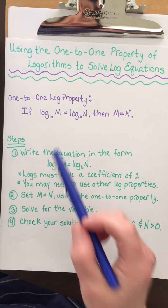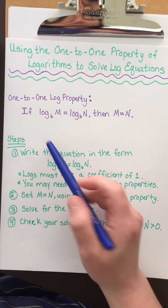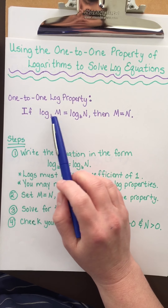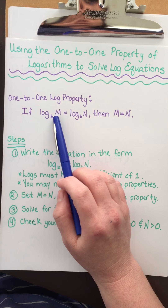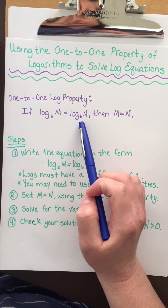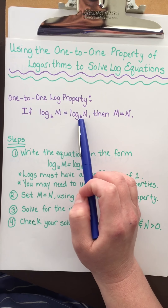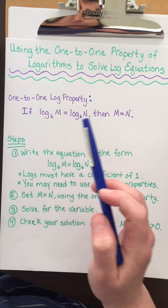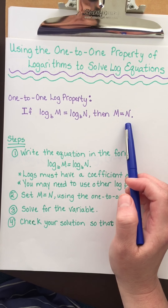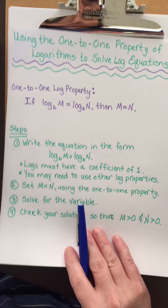What is the one-to-one log property? It basically says if you have log base B of m and that equals log base B of n — note they have the same base — then that means m must be equal to n. Sounds like common sense, right?